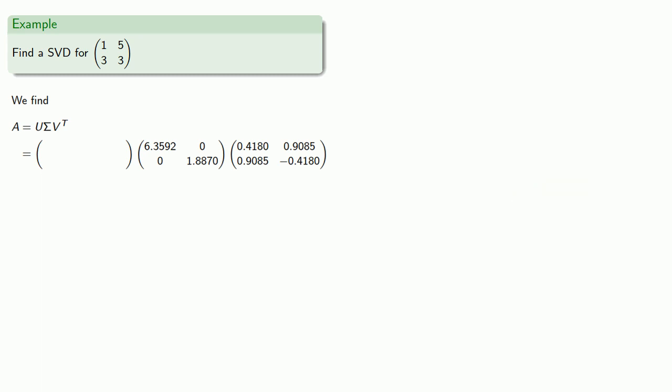Now we could find U in the same way, but we'll take a shortcut. To find U, notice that if A is U sigma V transpose, then A V is U sigma. And we know A, we know V, and we know sigma, and so this allows us to find U directly.